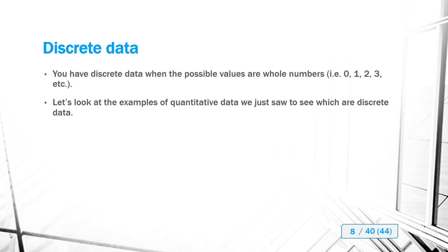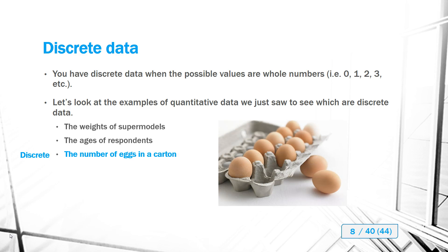The weights of supermodels are not discrete because we don't report weights in whole numbers — we use pounds or kilograms and parts of those units. Ages of respondents are generally not discrete either, because technically age includes months, weeks, and days — parts of a year — not just the whole number of years. So age is not necessarily a whole number and would not be considered discrete data.